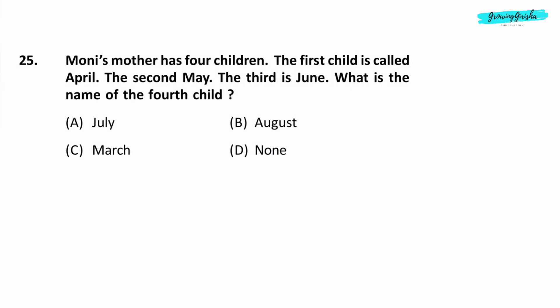Question 25. Moni's mother has four children. The first child is called April. The second, May. The third is June. What is the name of the fourth child? Option D. None.